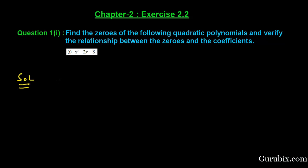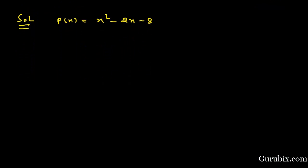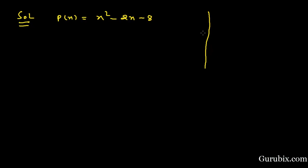Let us solve it. First, we shall note the given polynomial, that is x squared minus 2x minus 8. Secondly, we shall factorize this polynomial by using the method of splitting the middle term. We shall split the middle term such that the sum of the two factors equals the middle term, but the product equals the product of the first term and the last term.